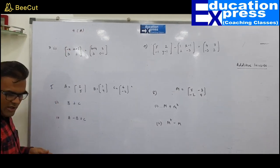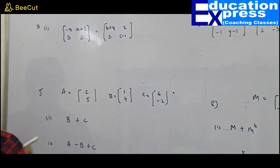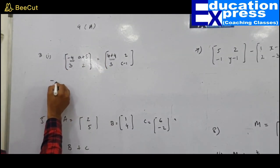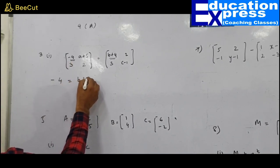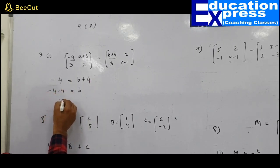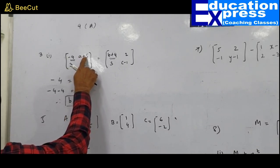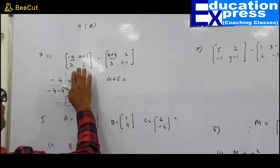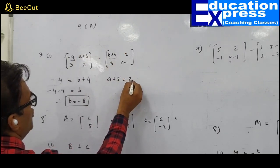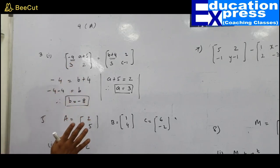Exercise 9A, question 3, sub-question 1: Two matrices are stated to be equal, and we must find the values of a and b. Looking at corresponding positions: −4 = b+4, so b = −8. Also a+5 corresponds to 2, so a+5=2, therefore a=−3.